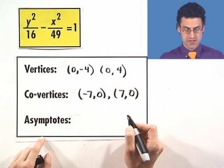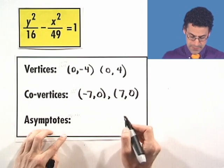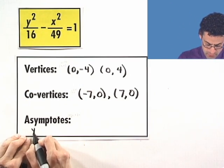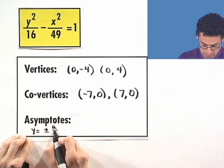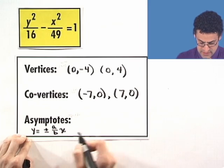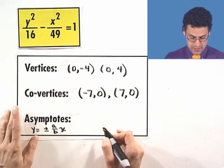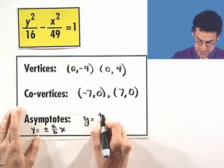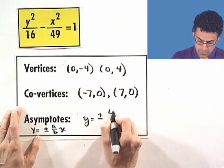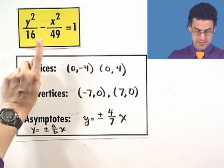And so where are the asymptotes? Well, remember that the asymptotes in this case are given by y equals, let me just write them, 4 minus 4, square root of this, over 7, square root of that, x.